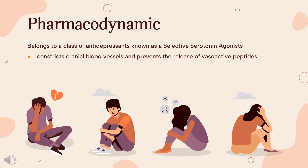Pharmacodynamics: Sumatriptan constricts cranial blood vessels and prevents the release of vasoactive peptides. The dose of sumatriptan varies widely by route of administration and in most cases, no more than two doses should be given daily. Medication overuse headaches may occur in patients who use sumatriptan frequently.